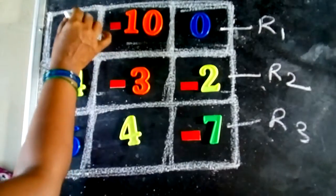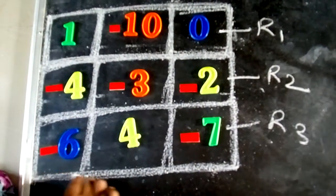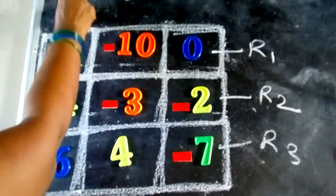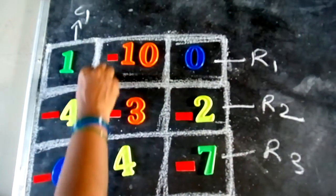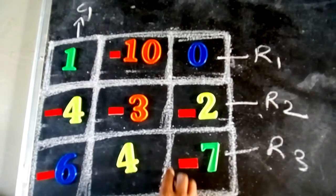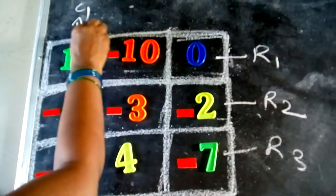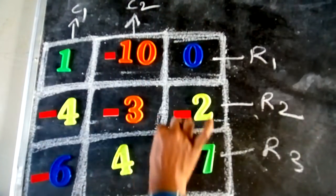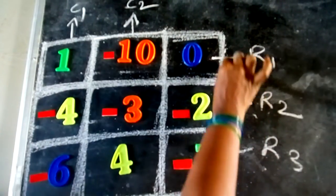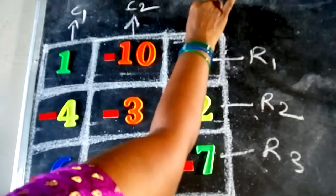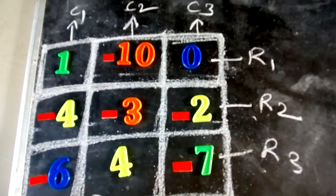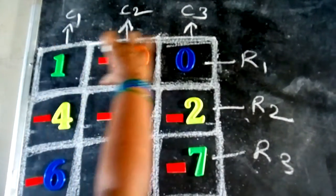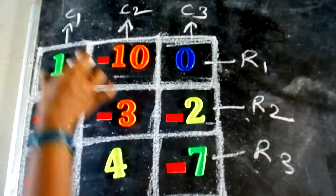Now we want columns. This part is called column 1. Next, this part is called column 2. This one: column 3. How many columns are here? Three columns. Three rows and three columns.